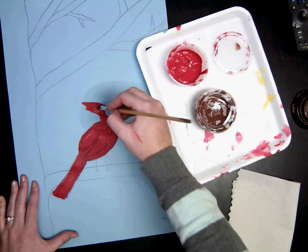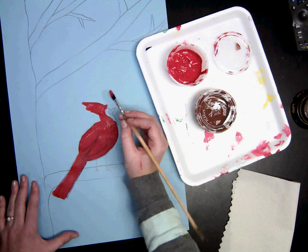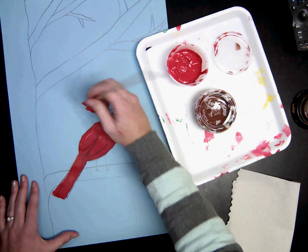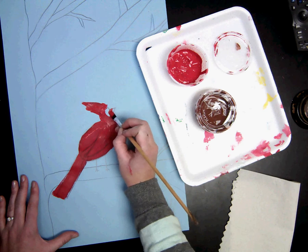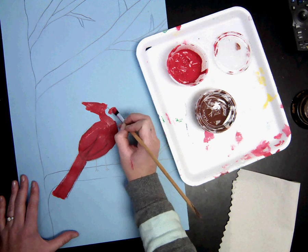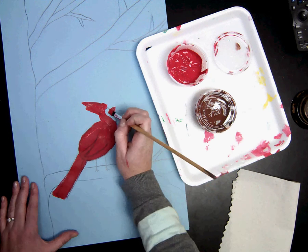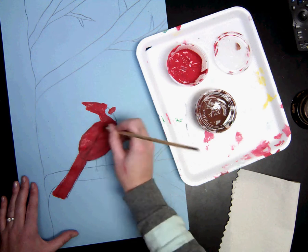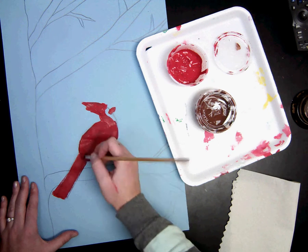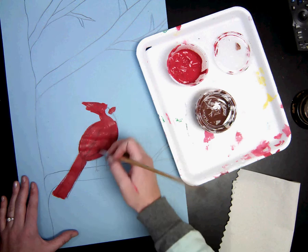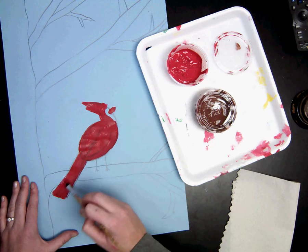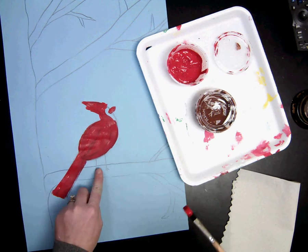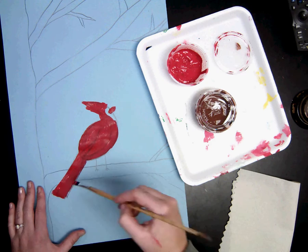And then this is going to be a little tricky, but we are going to paint the beak as well. And you don't need a ton of paint, but take your time and paint the entire cardinal red, except for the feet and the part that we are going to paint black.